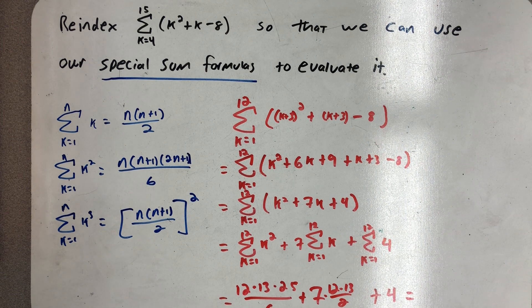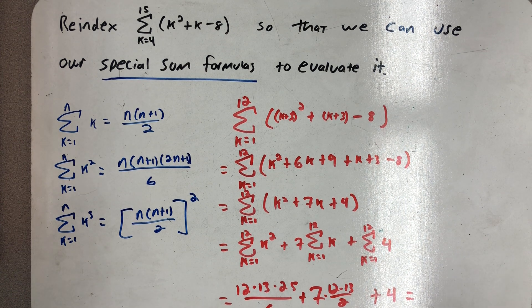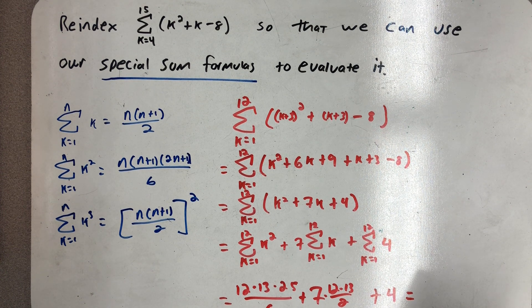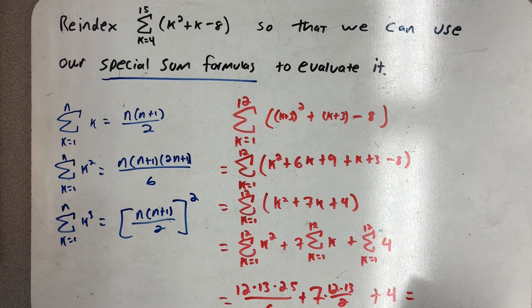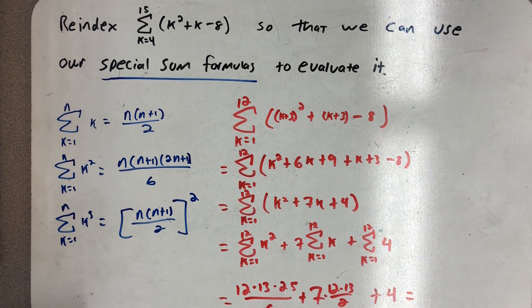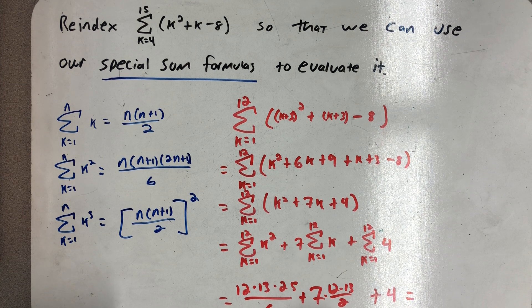We could probably manage to do that in our head. We could definitely divide that out. I have my handy TI-84 off camera here so I'm just going to use it to get an answer. This first part simplifies to 650.